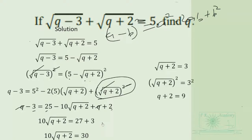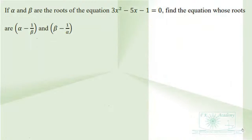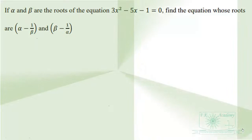Squaring gives Q + 2 = 9, so Q = 7. We verify: √(7 − 3) + √(7 + 2) = √4 + √9 = 2 + 3 = 5. The equation checks out, confirming Q equals 7.